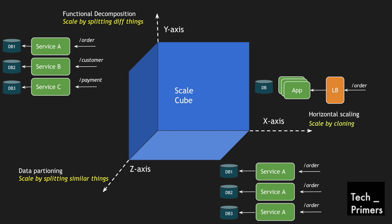Let's look at the pros and cons of each approach, starting with the x-axis. The pros: it's a simple and common approach — people generally just multiply their instances, which is horizontal scaling. That's the major advantage. However, a disadvantage is: what happens if the application scales but the database does not? All application instances connect to the same data source, so scaling reads and writes becomes a problem. We cannot handle the scalability of the data set because we only scaled application instances but did not think about scaling our data.